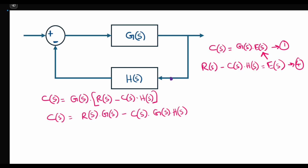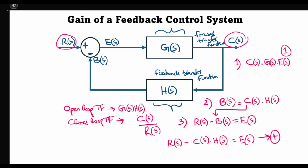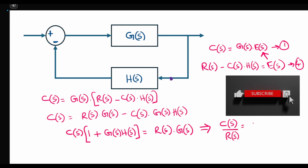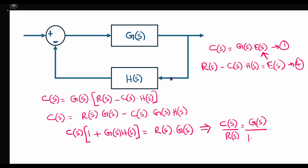Taking C(s) to the other side since we want the final expression in terms of C(s) and R(s), we take C(s) common, giving us C(s)·[1 + G(s)·H(s)] = R(s)·G(s). The closed loop transfer function we want is C(s) over R(s), so dividing both sides by R(s), we get: C(s)/R(s) = G(s) / [1 + G(s)·H(s)]. This is the closed loop transfer function of a feedback control system.